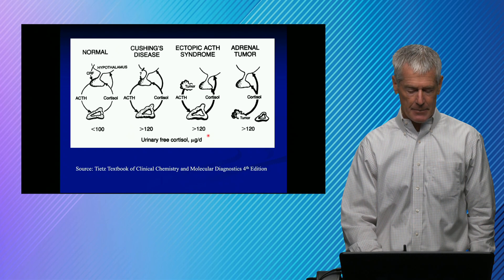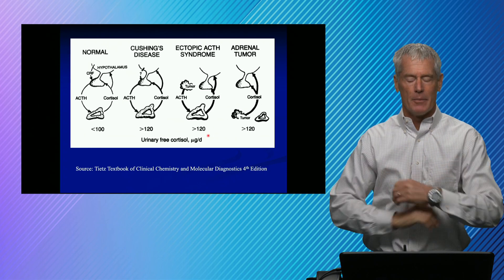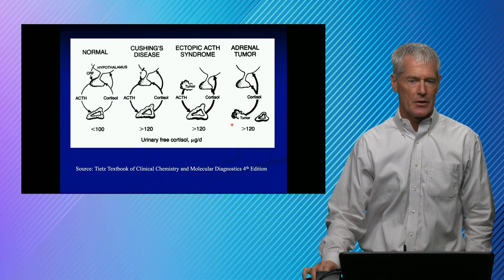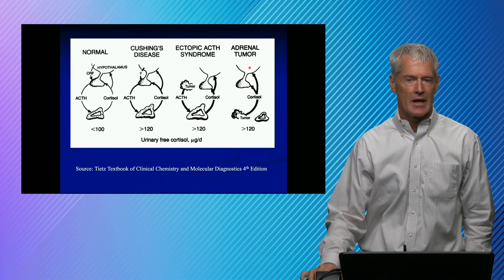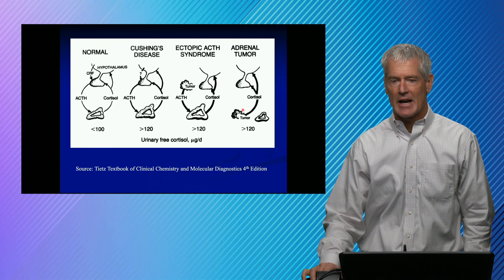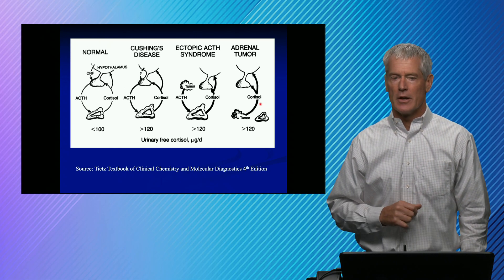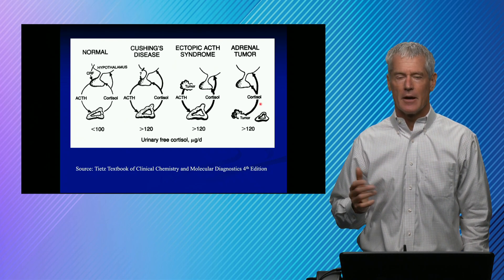The other lesion that can happen is an adrenal tumor — a micro adenoma that's secreting too much cortisol. The cortisol will saturate the binding globulin and spill out in the urine, giving us greater than 120 micrograms per day. In the setting of an adrenal tumor, ACTH is going to be low, because it's not the pituitary or an ectopic source driving it — it's the adrenal gland itself producing too much cortisol. So that's a quick introduction to how to interpret cortisol, and I hope it's useful for you.